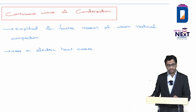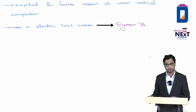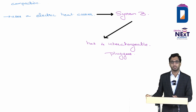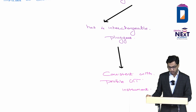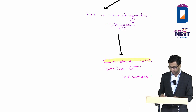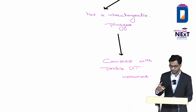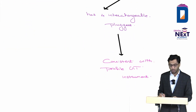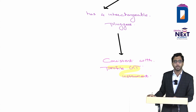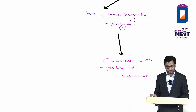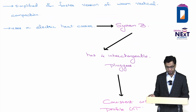System B has four interchangeable pluggers. These pluggers are consistent with the Profile GT rotary endodontic instrument — same apical diameter and dimensions. This is an important MCQ: System B pluggers have the same shape/dimensions as Profile GT instruments. The two systems are manufactured by the same company. System B is used for continuous wave condensation.